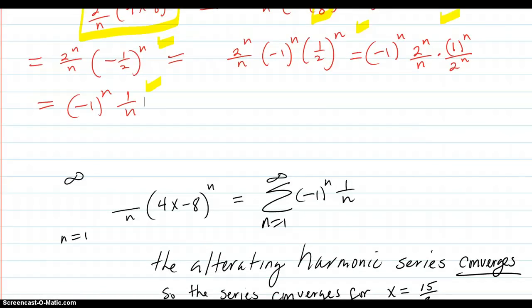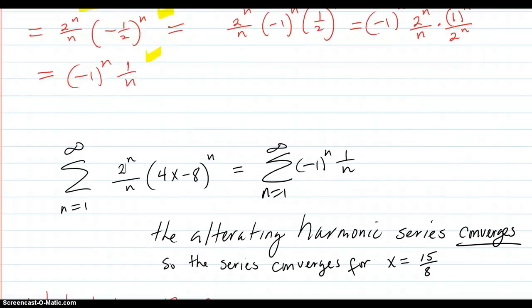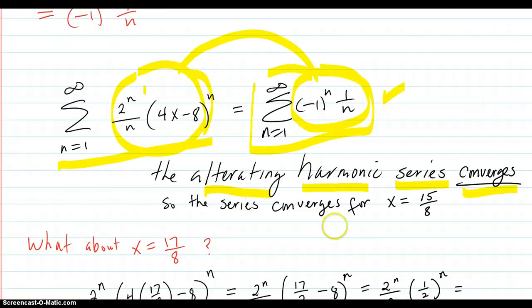And our series here then equals this series, because all this stuff here was equal to this. And this series here is the alternating harmonic series, which converges. So the series converges for x equals 15/8.